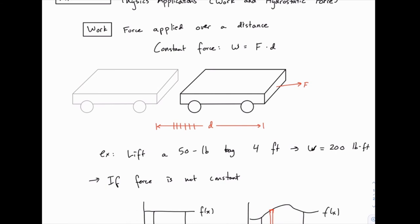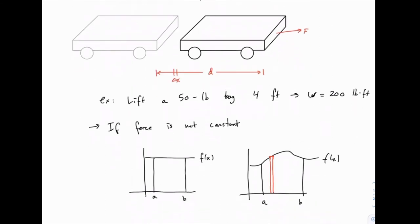So we can have something like delta x on one little section, and on that segment we can assume force is constant for a minute. Then we can calculate the work done on that segment, add it to the segment after it and the one after that and so on, and add all of these up.